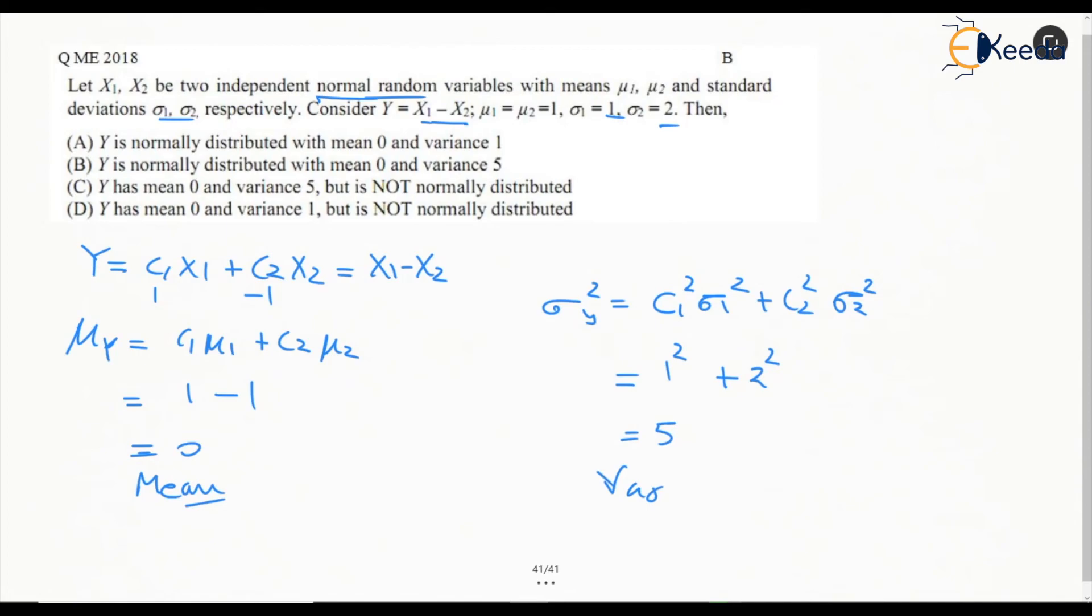This means mean is 0, variance is 5, and of course it is going to be a normal distribution because it is a linear combination of two independent normal random variables, which makes option B the right one.